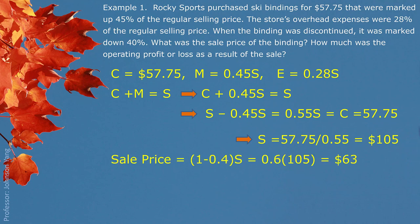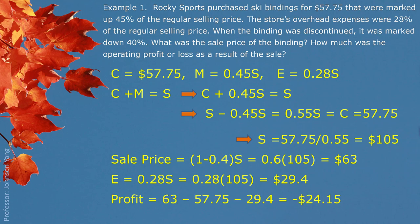With S solved, we find the sale price. We cut 40% of the regular selling price, so 60% remains: 60% of $105 = $63. That is the sale price. Expenses: 28% of $105 = $29.40. Profit = sale price minus cost minus expenses = $63 - $57.75 - $29.40 = negative $24.15. So for each ski binding, there is a $24.15 loss.